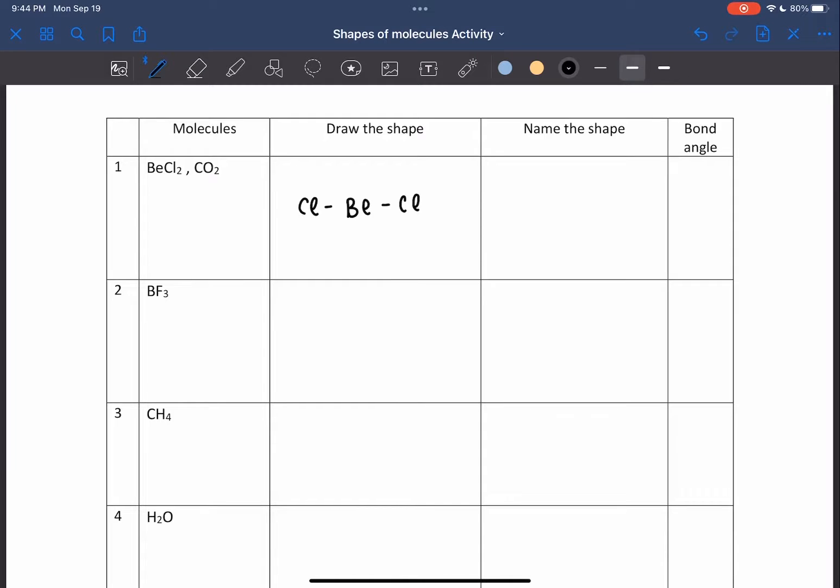For two bond pairs, we have two examples: BeCl2 and CO2. The name of the shape is linear and it has a bond angle of 180 degrees.